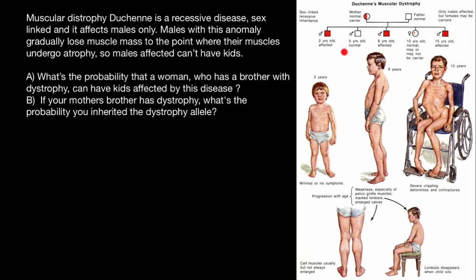Let's take a look at this pedigree. This is an X-linked recessive genetic disorder. The mother has one defective X chromosome and one normal X chromosome, and her phenotype is normal. The father also has a normal X and Y chromosome. As you remember, affected males cannot have children, so we know for sure that the father of this family is phenotypically and genotypically normal.